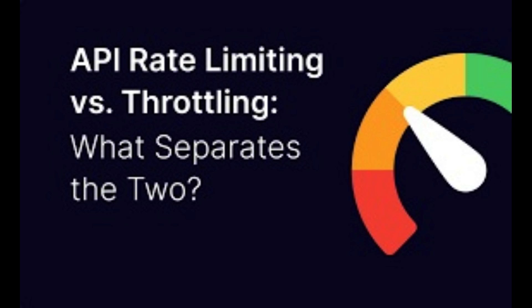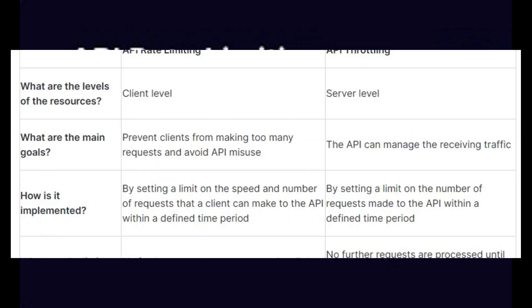API Rate Limiting and Throttling are two techniques used to control and manage the flow of requests to an API, but they serve slightly different purposes.